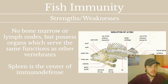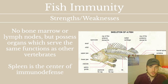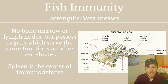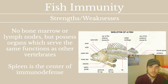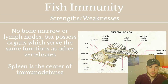The first thing to talk about is the fish immune system and how it's relevant to diseases. It has a lot of strengths and weaknesses. Unlike other higher vertebrates such as mammals, fish don't have bone marrow and they don't have lymph nodes, which are very important in the immune defense of higher vertebrates. But fish do have small organs that perform similar functions. One of these is the spleen, which is the center of immune defense in fish and the main control area for all the different responses a fish might have to a disease, parasite, or virus.